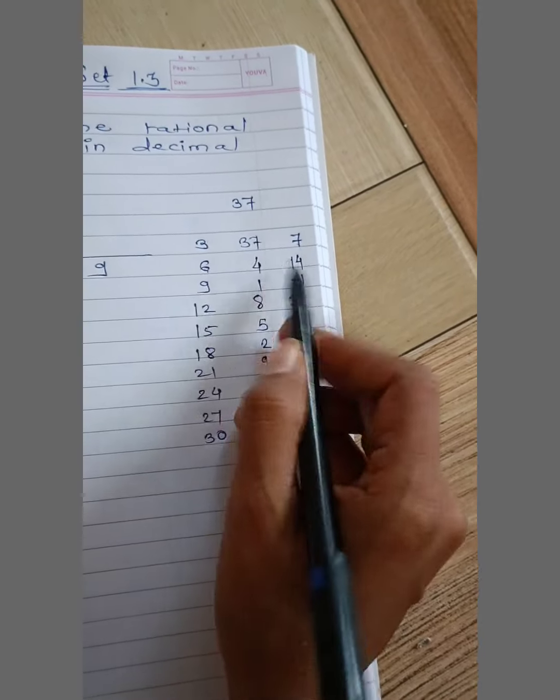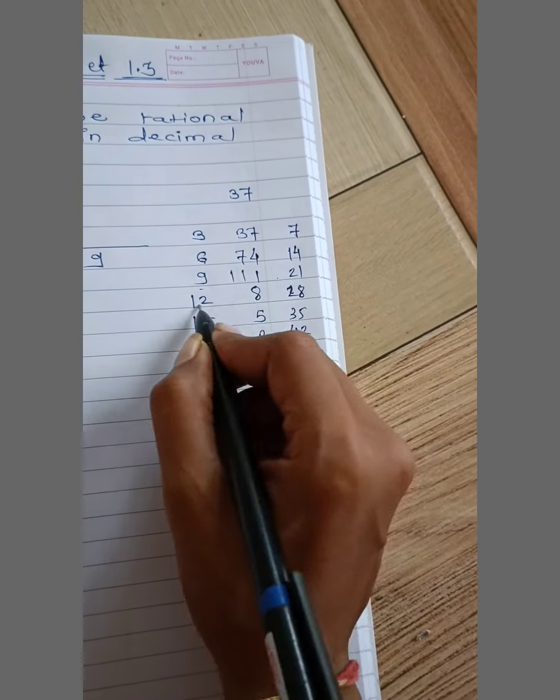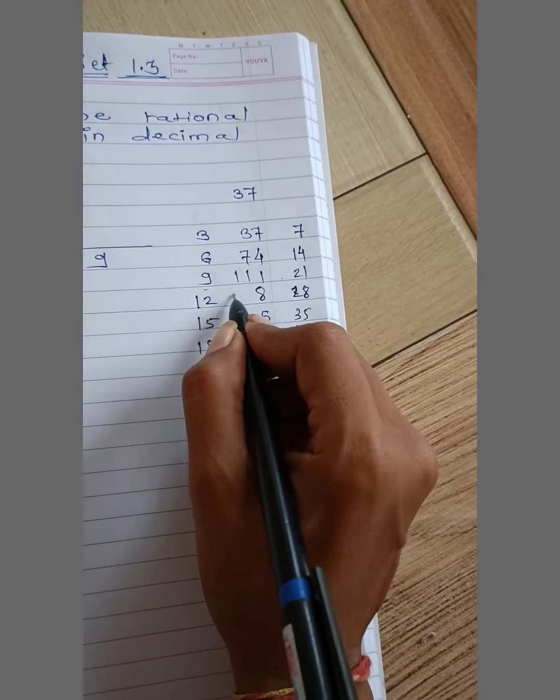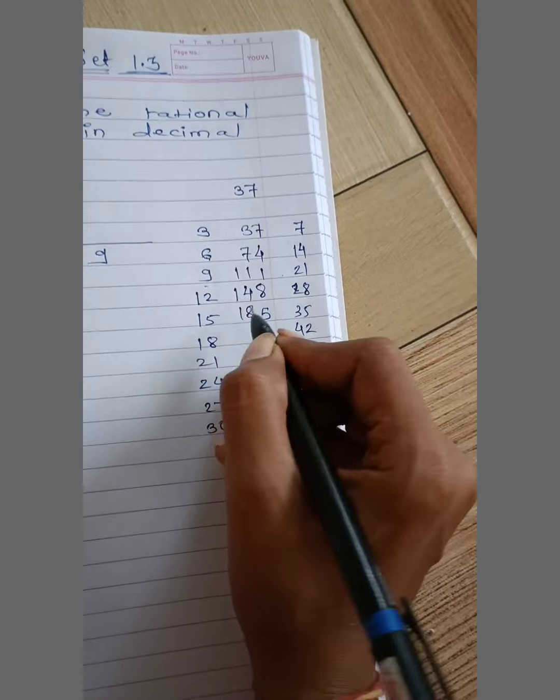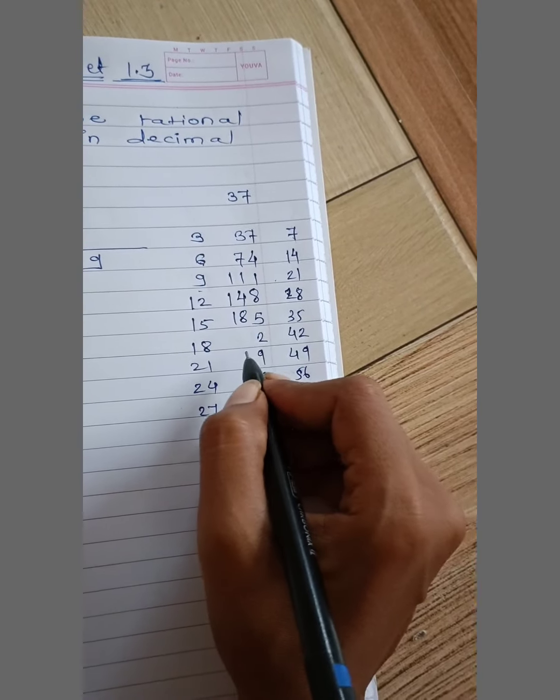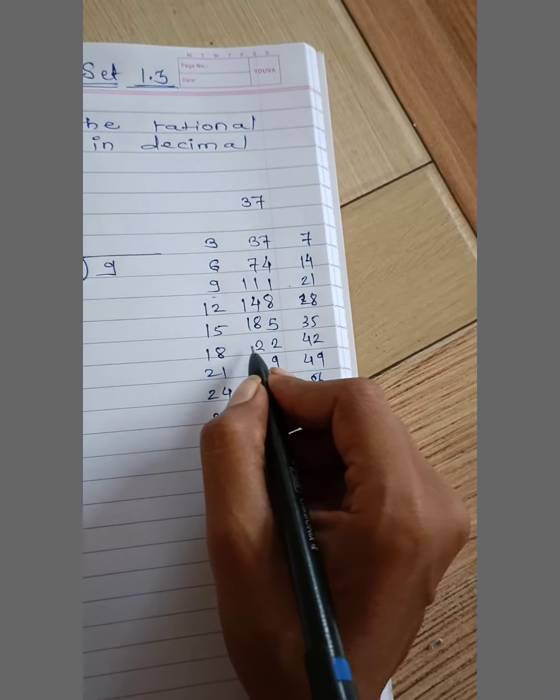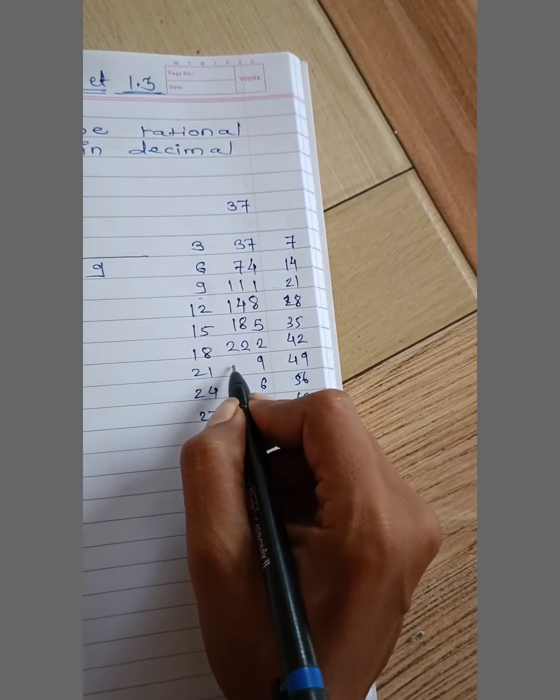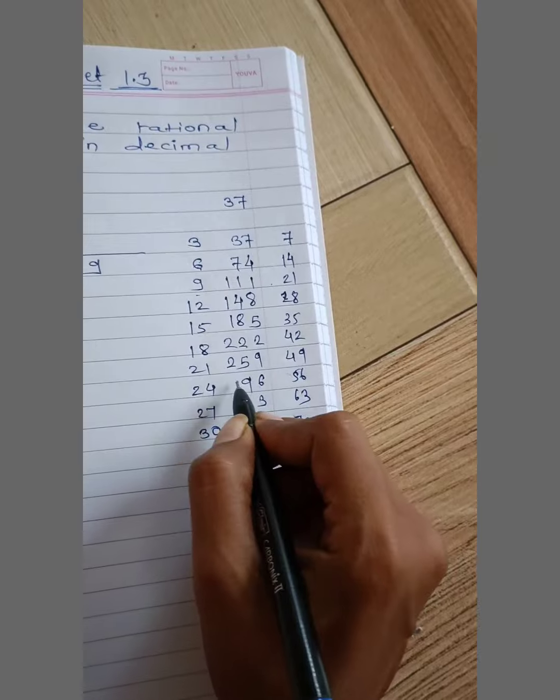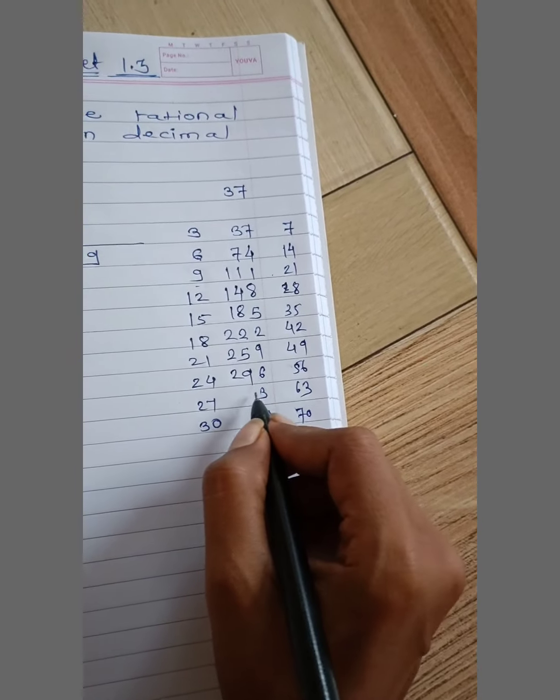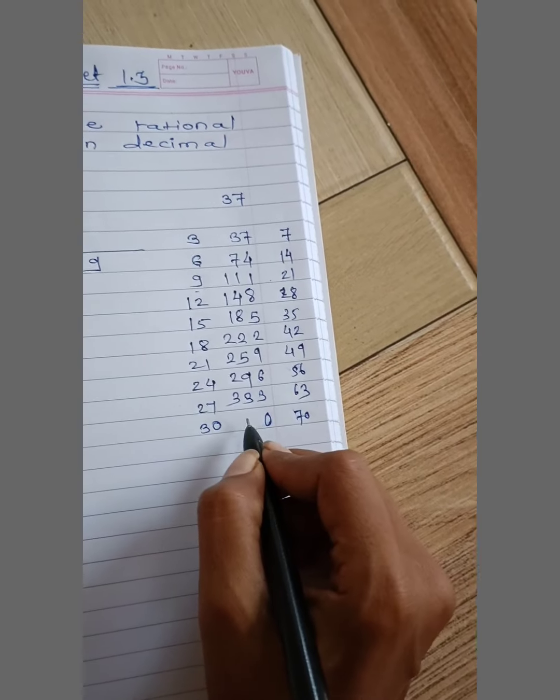Then 6 plus 1, 7. Then 9 plus 2, 11. Then 12 plus 2, 14. Then 15 plus 3, 18. Then 18 plus 4, 22. Then 21 plus 4, 25. Then 24 plus 5, 29. Then 27 plus 6, 33. 30 plus 7, 37.